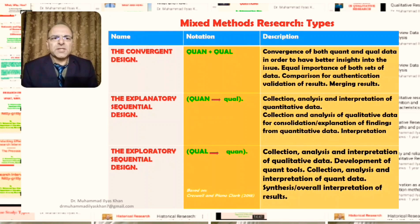The quantitative tools are actually developed in the light of our findings from the qualitative part, initial qualitative part. This then leads to the collection, analysis, and interpretation of quantitative data. Ultimately, there is a synthesis. Our findings from both sets of data then lead to a synthesis or an overall interpretation of the results.